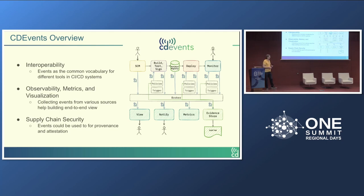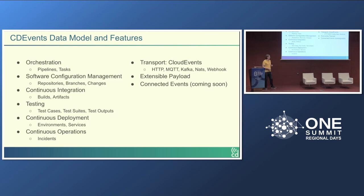Another important use case you can address through this evidence store is supply chain security. Collecting all this data allows you to trace where a certain artifact came from, and if you have a deployment or an incident in production, you can trace back all the things that happened in your toolchain that led to that point. The CD Events specification is organized into different groups of events corresponding to different parts of the typical CI/CD pipeline, including events related to orchestration — for tools like Jenkins or Tekton — about pipeline starting, task starting, ending, and so forth.